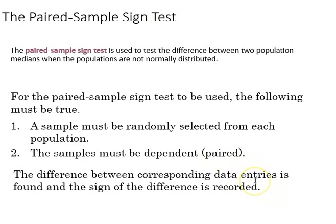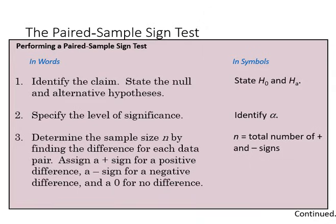The difference between the corresponding data entries is found, and the sign of the difference is what we're going to be recording. These are the steps for the paired sample sign test. We begin by identifying our claim and specifying our level of significance alpha, and then we determine our sample size n as the total number of plus or minus signs, in this case the difference between two population medians.